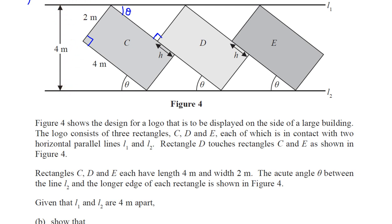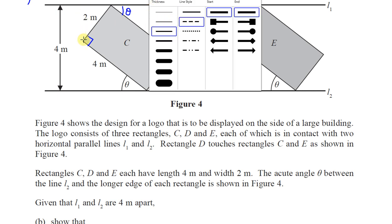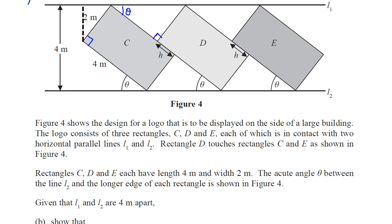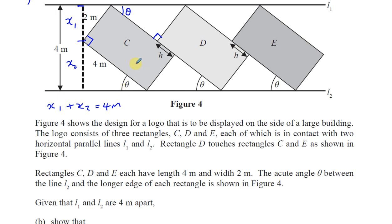If I draw a vertical line up from this point and call that length x1, and draw another vertical line here, that gives x2. I know that x1 plus x2 must equal four meters. Now this angle here is theta, and this angle is 90 minus theta because the corner is 90 degrees — vertical and horizontal. So that must also be theta here.